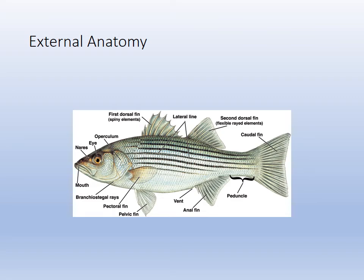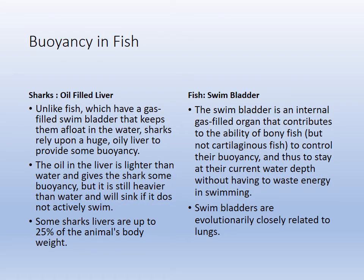Fish external morphology: familiarize yourself with the fins and general external anatomy for the fish lab and trip. Buoyancy is important: the Chondrichthyes have huge, very oily livers — the largest organ in their bodies — and oil is less dense than water, helping them move up and down the water column by adjusting oil levels. Bony fish have a swim bladder that produces gases less dense than water, allowing them to move up and down. They adjust buoyancy via liver or swim bladder.